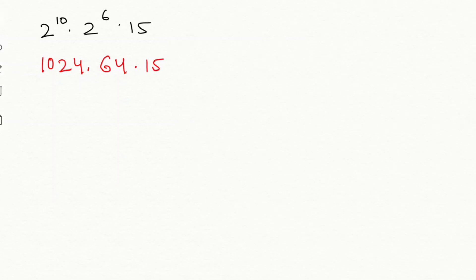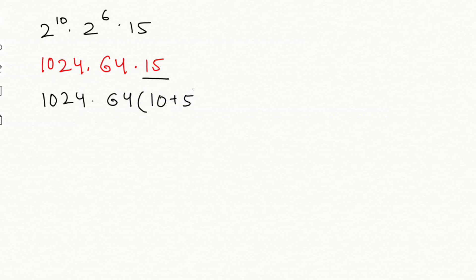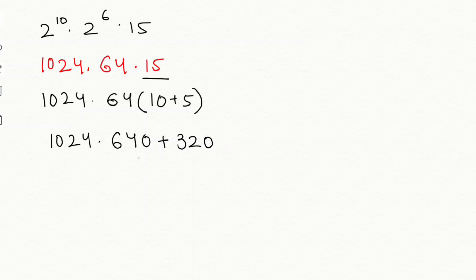Now I am going to multiply 64 with 15. First I am going to split 15 as 10 plus 5. So 1024 times 64, bracket 10 plus 5. Multiplying 64 by 10 gives 640, and 64 by 5 gives 320, so 64 times 15 equals 960.